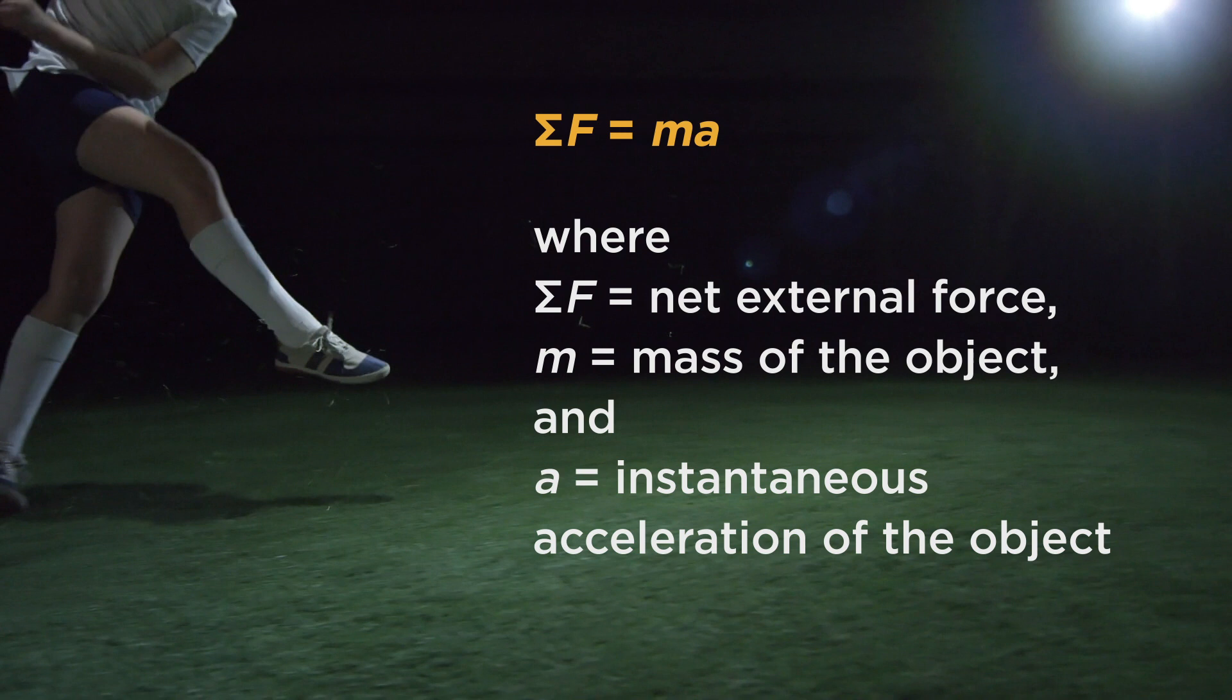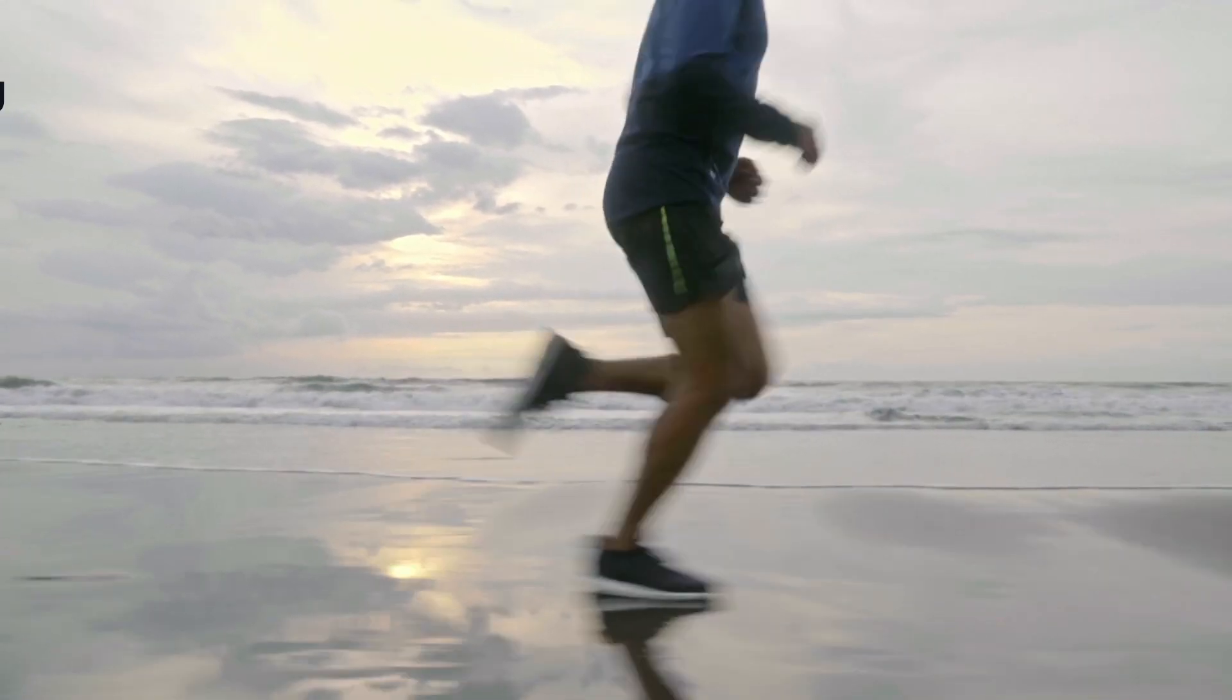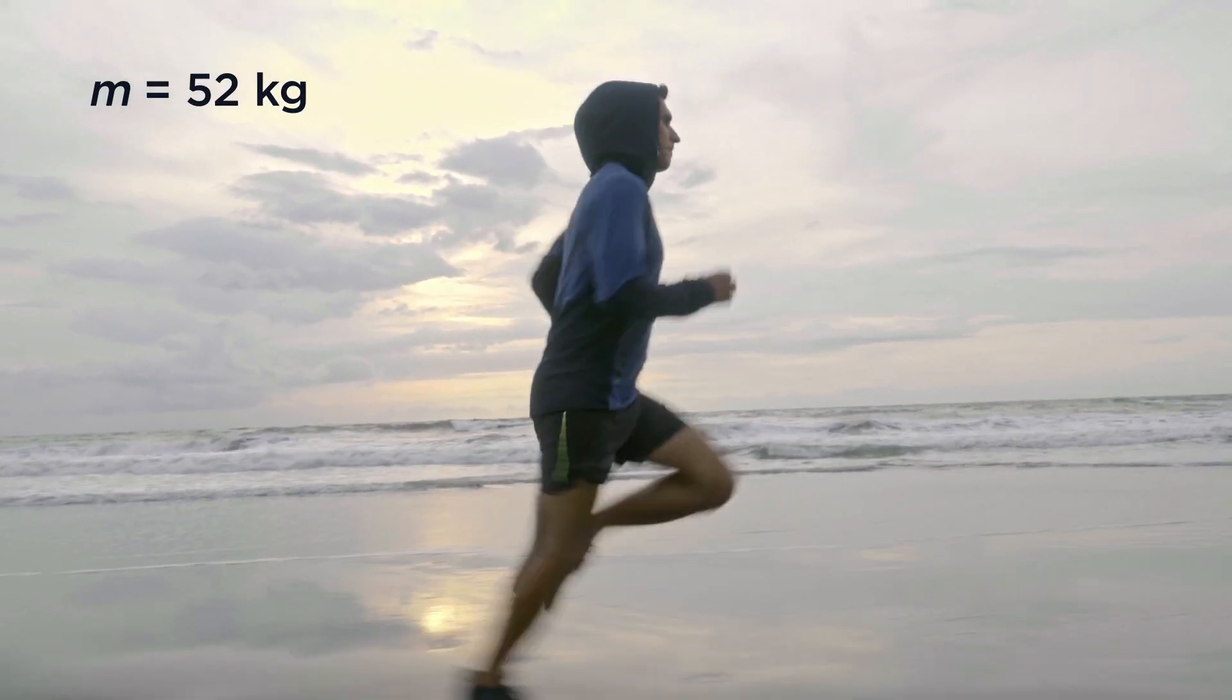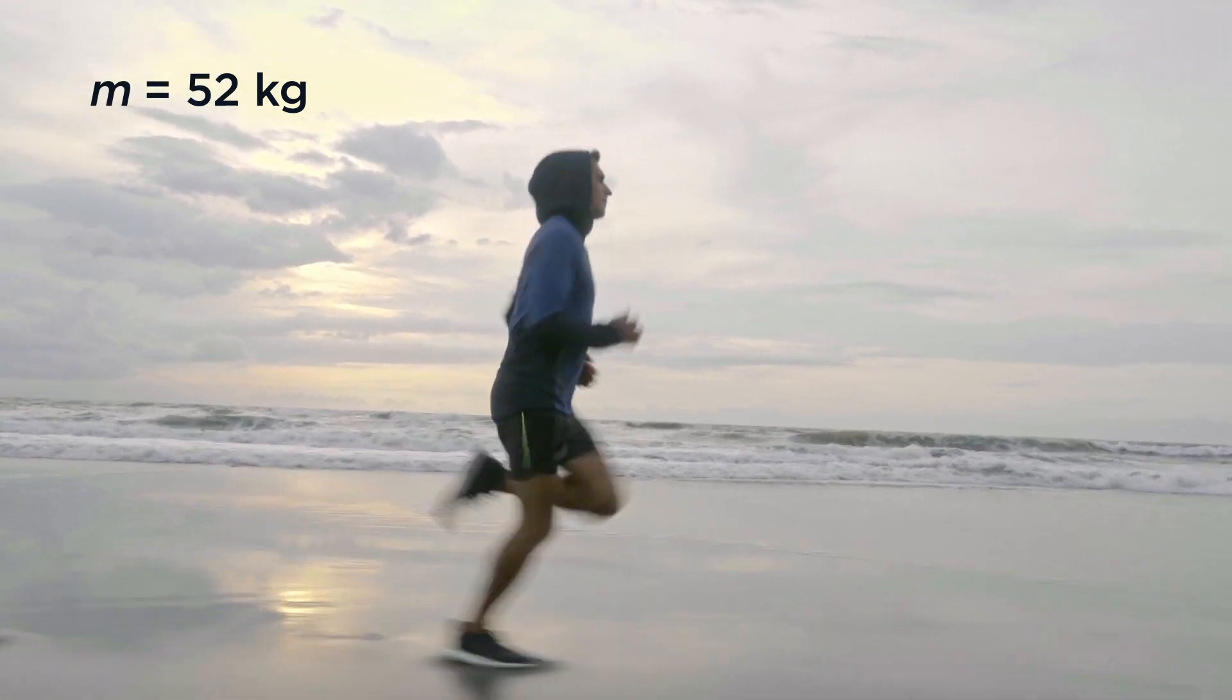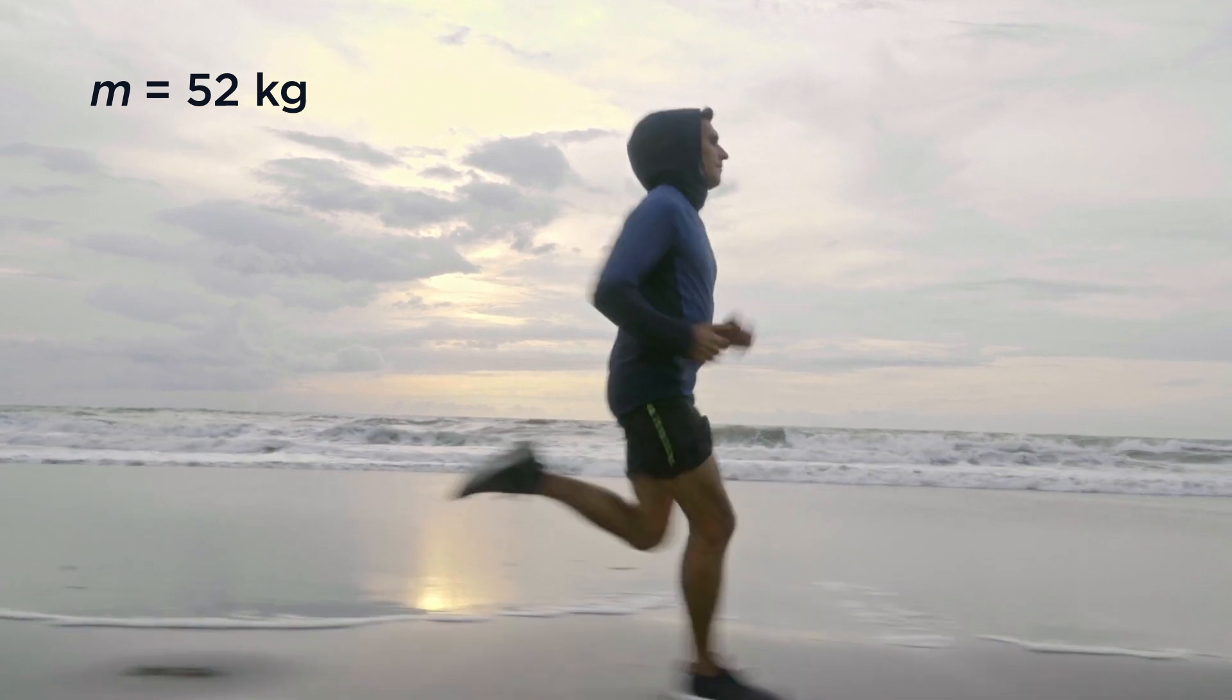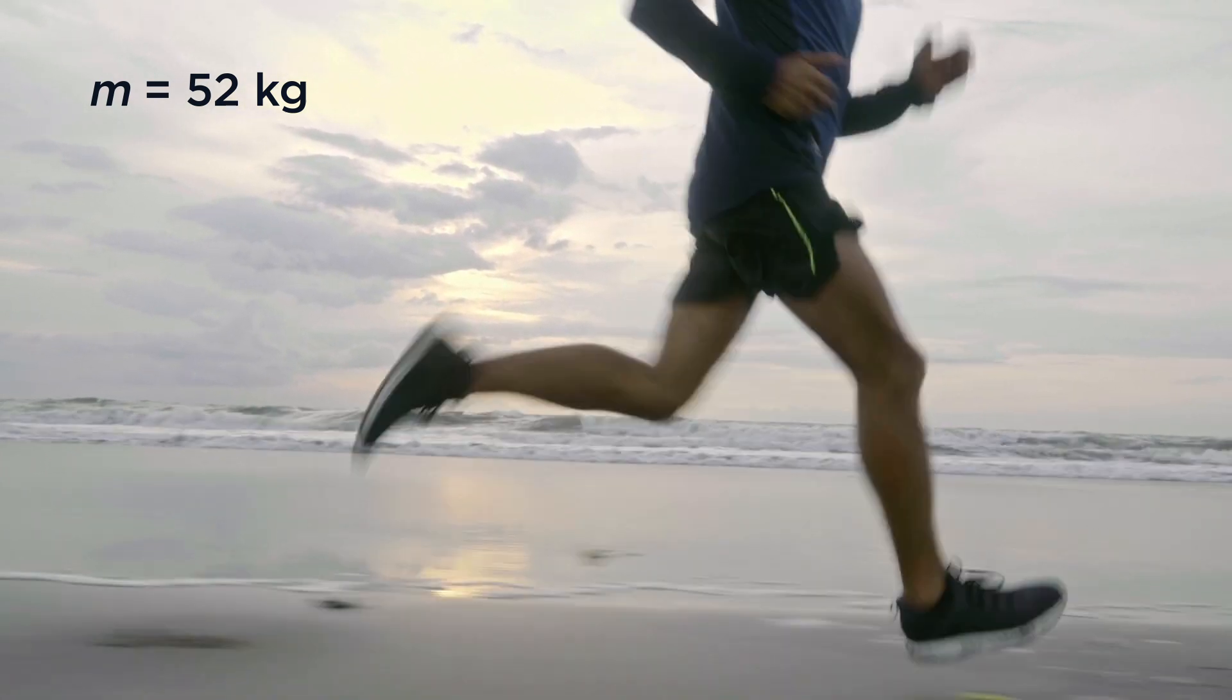How can we apply Newton's second law of motion to analyze a runner's performance? Consider this scenario. A 52-kilogram runner is running forward at 5 meters per second when his foot strikes the ground. The vertical ground reaction force acting under his foot at this instant is 1,800 newtons. The friction force acting under his foot is a 300 newton braking force. These are the only external forces acting on the runner other than gravity.